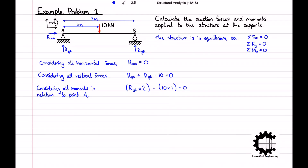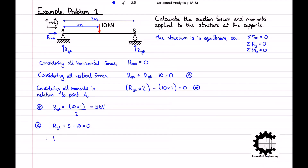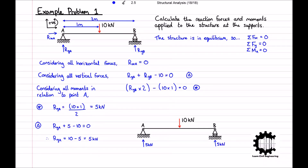From these equations we can see that Rxa equals zero. Moving on to the moment equation with one unknown, rearranging for RYB gives RYB equals 10 times 1 divided by 2, therefore RYB equals 5kN. Substituting into the vertical forces equation gives RYA plus 5 minus 10 equals zero, so RYA equals 5kN. We conclude that there are no horizontal reaction forces, and both reaction forces at point A and point B have a magnitude of 5kN acting upwards.